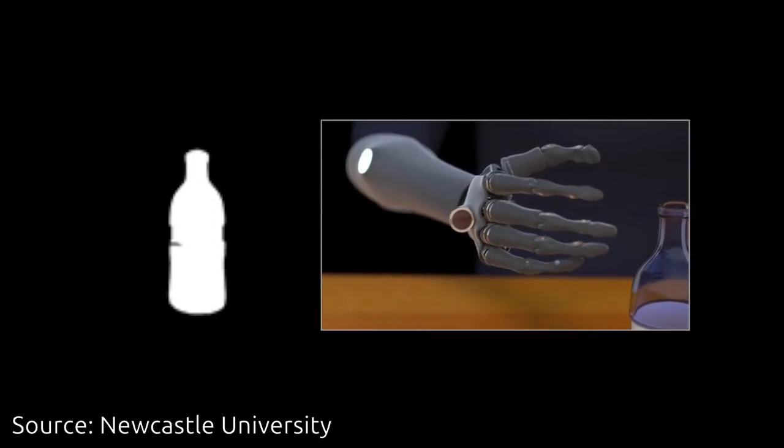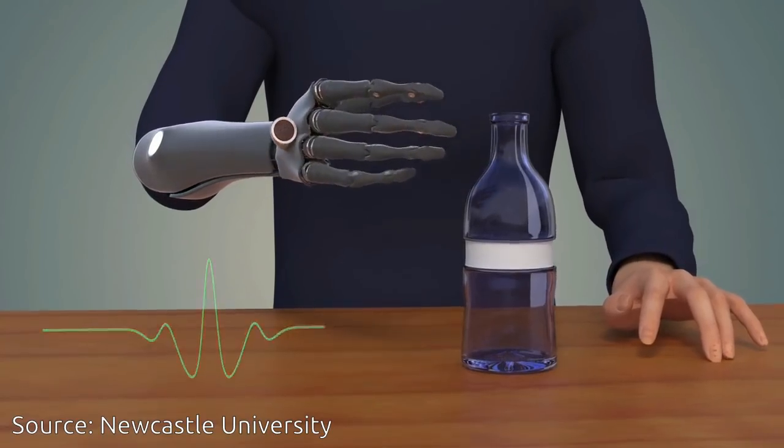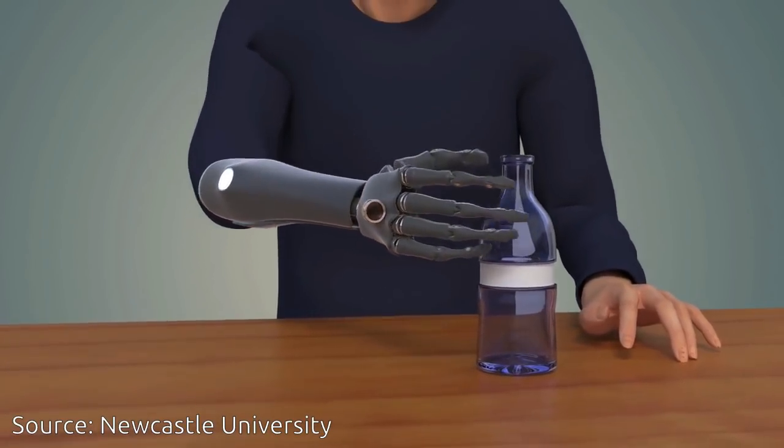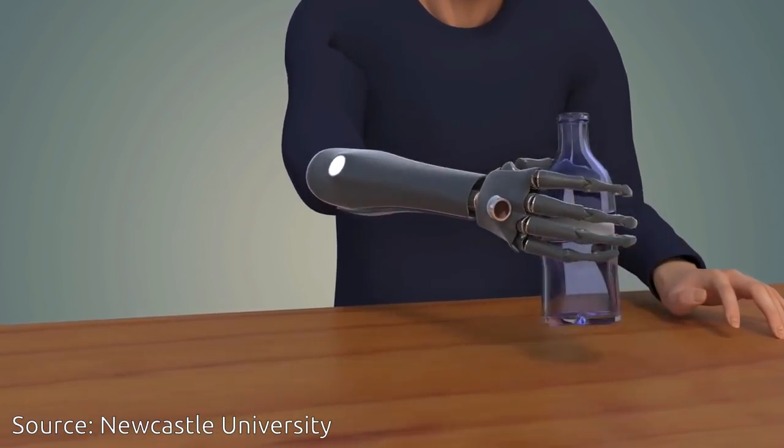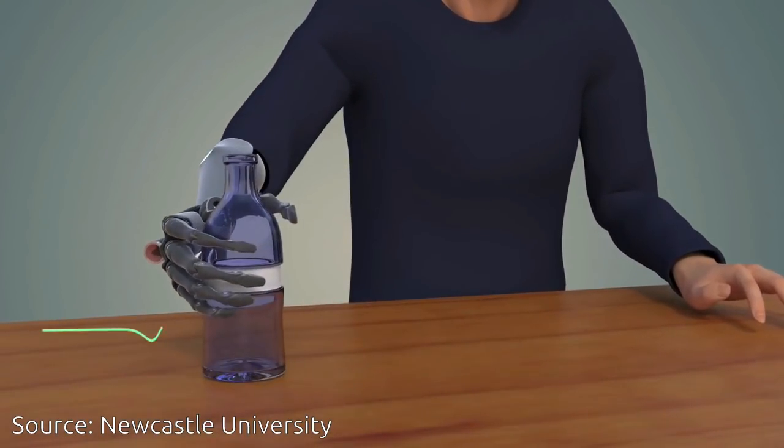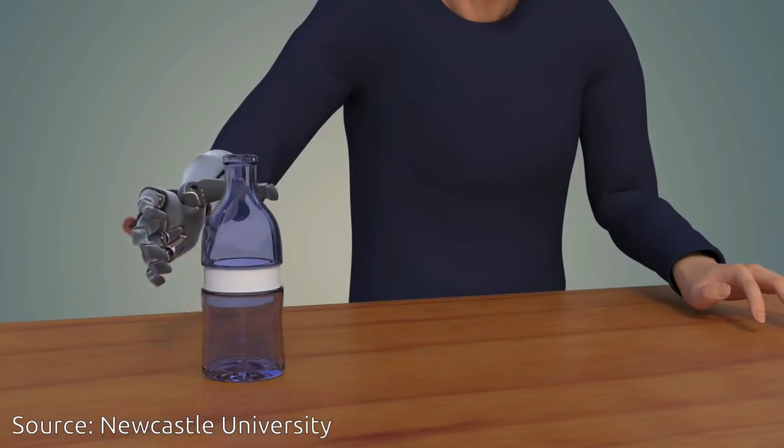Led by biomedical engineers at Newcastle University, the bionic hand is fitted with a camera which instantaneously takes a picture of the object in front of it, assesses its shape and size, and triggers a series of movements in the hand.